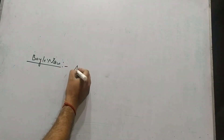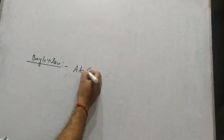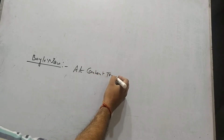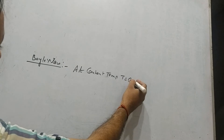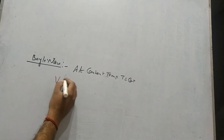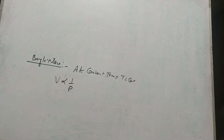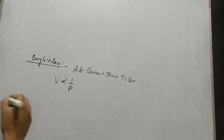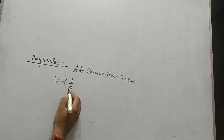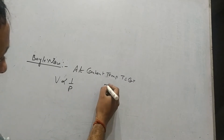Now I want to explain Boyle's law. According to Boyle's law, at constant temperature — that is, T equals constant — the volume of a gas is inversely proportional to the pressure of the gas. So volume of a gas is inversely proportional to the pressure of a gas.